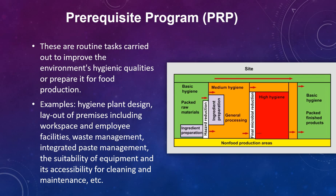Here I am putting one picture. You can see it is an example of hygienic plant design. They have categorized hygiene into basic hygiene, medium hygiene, high hygiene, and again basic hygiene. Where we have to maintain basic hygiene — you can see packed raw materials are maintaining basic hygiene. Then medium hygiene where general processing takes place. Then high hygiene. And again basic hygiene for packed finished products. So with this picture you can get an idea of the hygiene plan design.